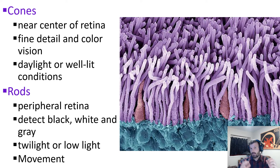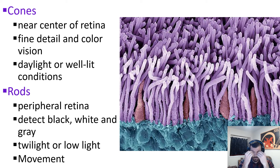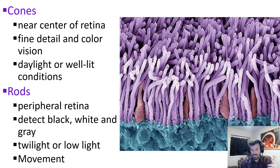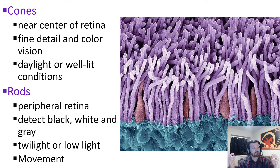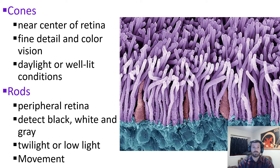Rods and cones are sensory receptor cells with specific jobs. Cones are near the center of the retina — remember the fovea is at the center. Cones pick up fine detail and color, and they're really good in daylight but not so great at night. Rods, on the other hand, are on the periphery of the retina. They're much better at picking up movement, they cannot see color, and they're much better in darkness. Think about it: if you're in a dark, scary place, do you want to see color or do you want to see movement out of the corner of your eye so you know something is coming for you?